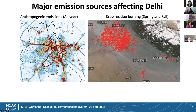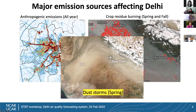Crop residue burning is another major source, occurring in the states upwind of Delhi — particularly in the state of Punjab, India's top food-producing state. Smoke from these fires frequently travels to New Delhi and is a major topic of debate among politicians and the public during this season. Delhi also frequently experiences dust storms, especially during the pre-monsoon season in April and May, which also contributes to poor air quality.